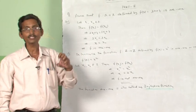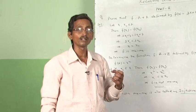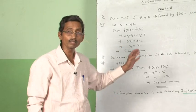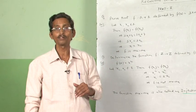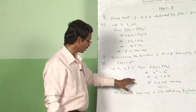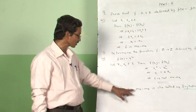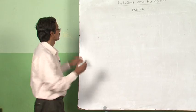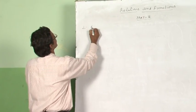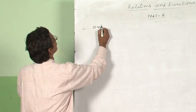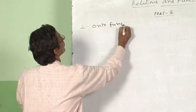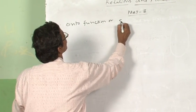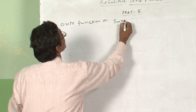So children, we discussed what is a one-one function, an example for a one-one function, and an example for a function which is not one-one. The one-one function is also called an injective function. The second type is the onto function, also called a surjective function.